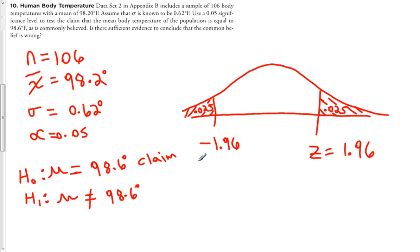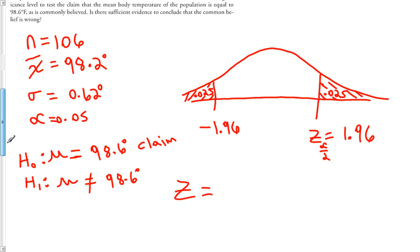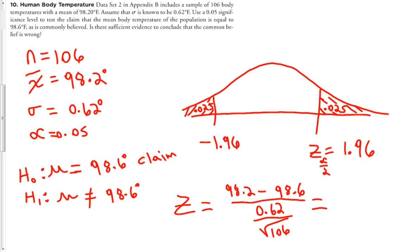Now I need to calculate the test statistic. The formula is x-bar minus mu, divided by sigma over the square root of n. So the test statistic is 98.2 minus 98.6, divided by 0.62 over the square root of 106. This calculation yields negative 6.64.